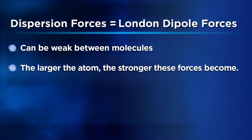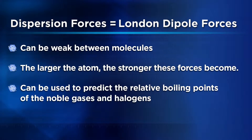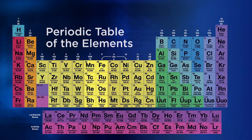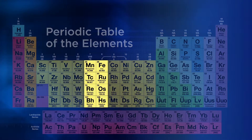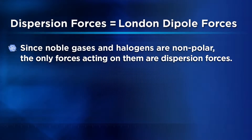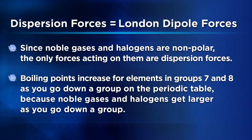An interesting fact about these forces is that they can be used to predict the relative boiling points of the noble gases and halogens. All of the noble gases and halogens are non-polar, so the only forces acting between them are dispersion forces. Since dispersion forces get stronger the larger the atom or molecule is, the boiling points of the Group 7 and Group 8 elements increase as you go down a group, because those atoms are getting larger. Great job, Emily.